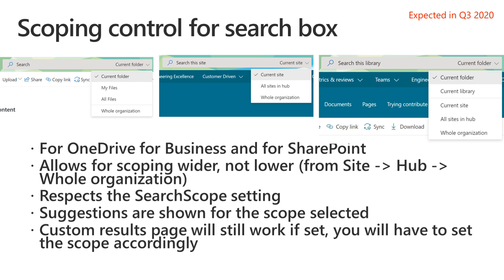Some things to call out: the scoping works wider, not narrower. You can go from site to hub to whole organization, but once you're at the hub you can't drill down into a specific site. There is a setting called search scope that allows you to set the default scope to hub or whole organization level for a given SharePoint site, and if any of these settings are configured you'll only see those options.